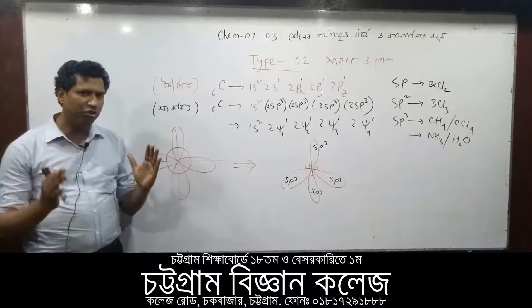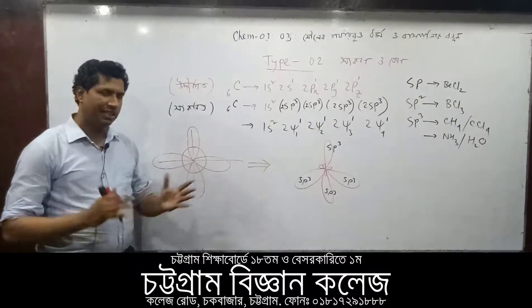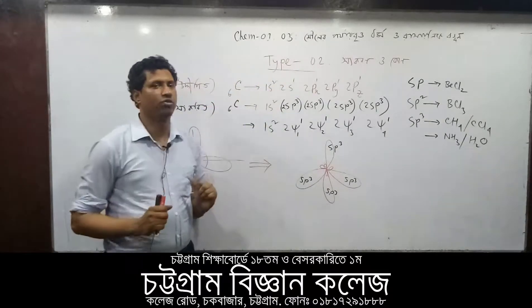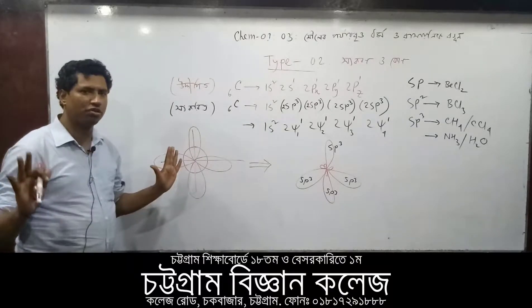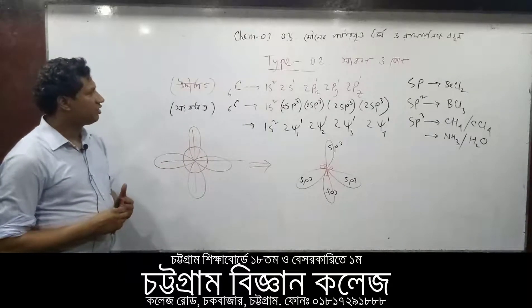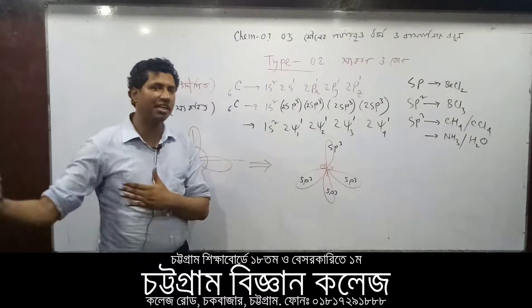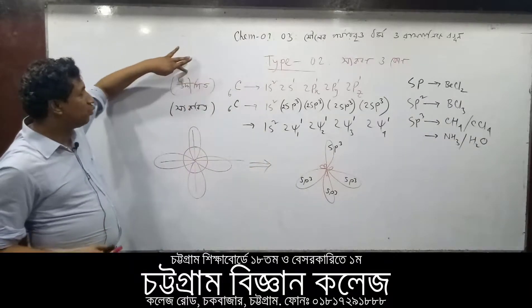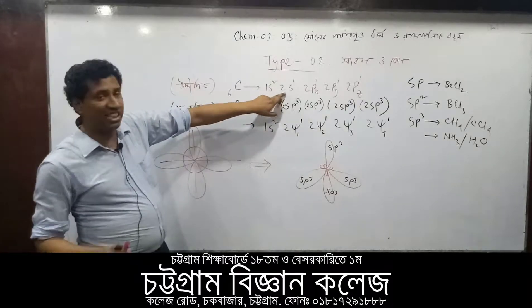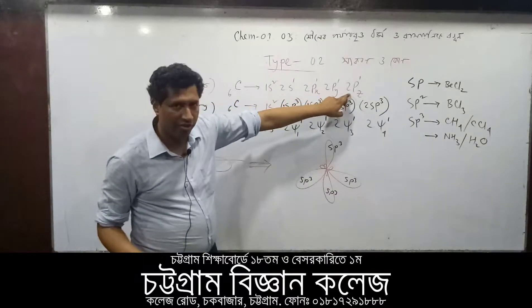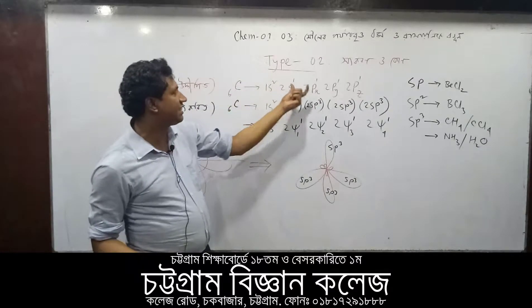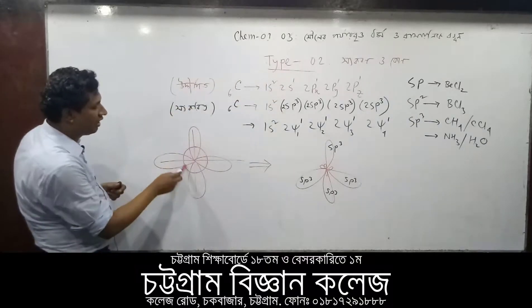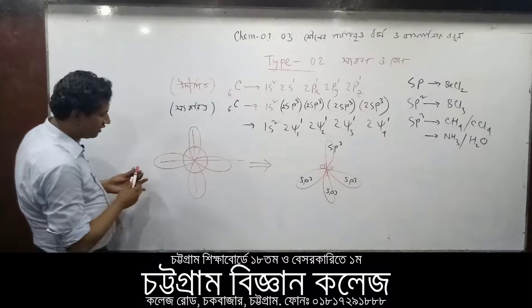If you are interested in the answer, the carbon electron configuration is equal to 2s, and the electron is equal to 2s. Therefore, the carbon electron is equal to 4s.